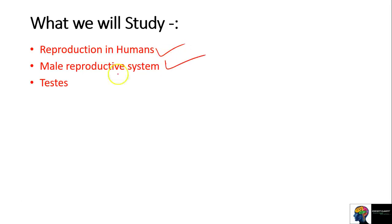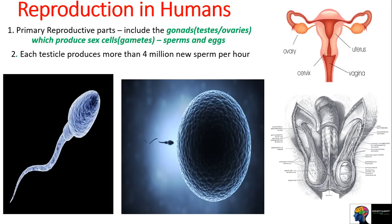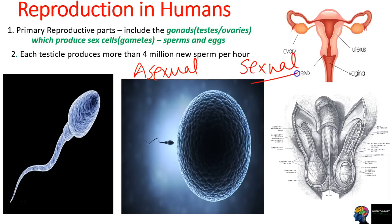Then we will learn about the male reproductive system. Third, we will learn about testes and its structure. Reproduction is available in two ways - one is asexual and one is sexual. Asexual reproduction is mainly in plants, with a single parent involved.